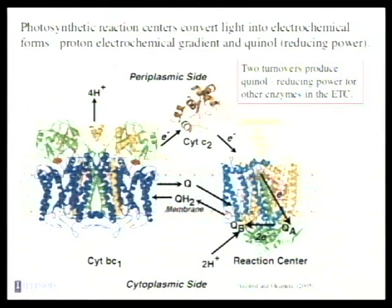So reaction centers, or photosynthetic systems in general, convert light energy into two basic forms. One is reducing power, which is distributed to other membrane complexes like the BC1 complex, and the other is an electrochemical gradient, which includes both a true electrical potential, because electrons are moved across the membrane, the insulating layer of the membrane, in a process I'll show you in a moment, and also protons are taken up, so that's part of the electrochemical energy conversion.